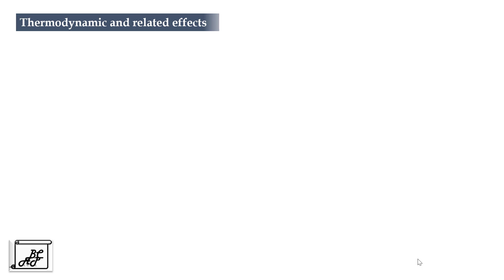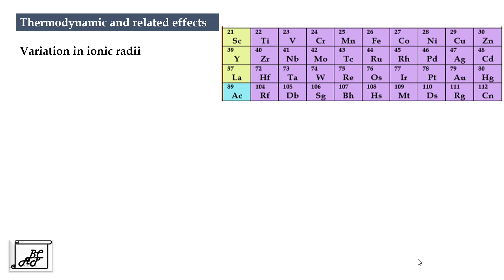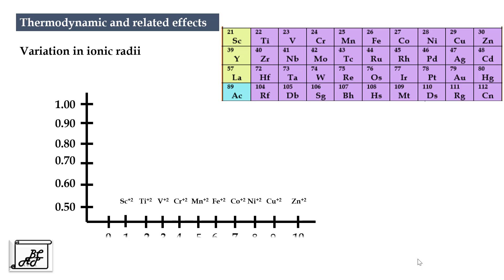Let's move to the next property, thermodynamic and related effects. In this we will study ionic radii. These are the transition metals situated at the center of the periodic table. When we plot the graph of ionic radii versus the number of electrons in the d orbital we have to consider two cases: strong ligand field and weak ligand field. When we see the periodic table, moving from left to right the atomic size decreases, but crystal field splitting affects the variation of this ionic radii.